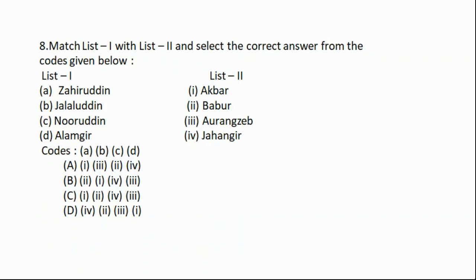Question number eight: Match list one with list two. List one includes — A: Sahiruddin, B: Jalaluddin, C: Nuruddin, D: Alamgir. List two includes — one: Akbar, two: Babur, three: Aurangzeb, four: Jahangir. The correct answer is option B: two, one, four, three.